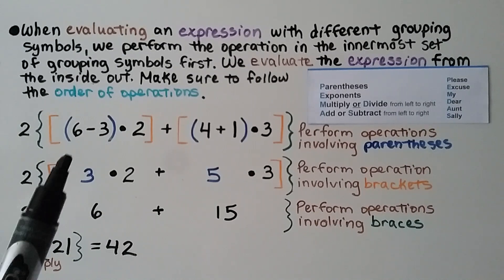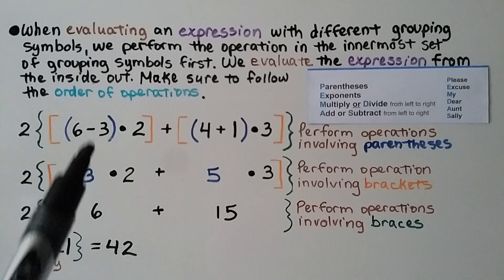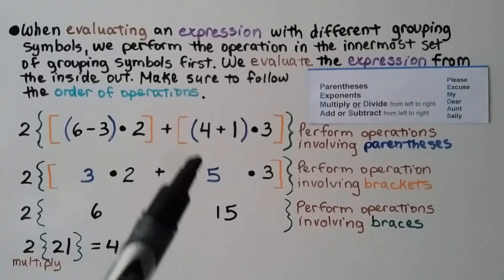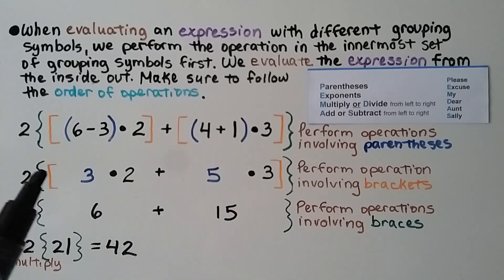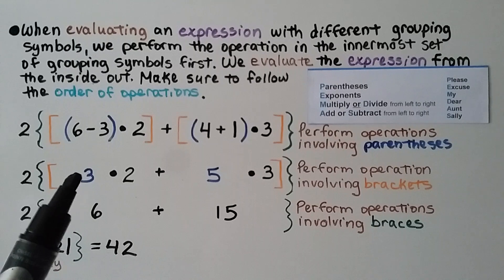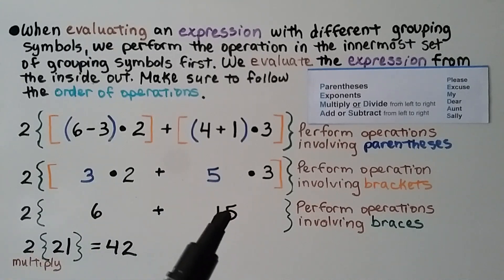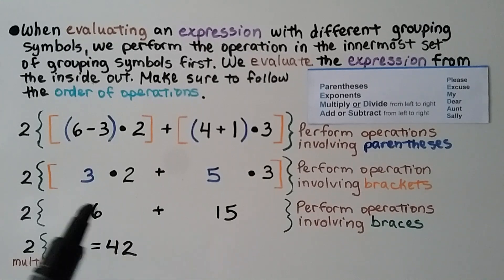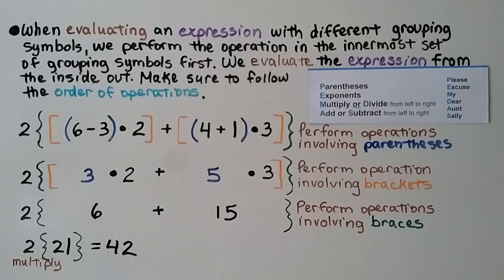We see many grouping symbols, so we start with the parentheses: 6 minus 3 is 3, and 4 plus 1 is 5. Now we perform operations within the brackets: 3 times 2 is 6, and 5 times 3 is 15. Now we perform operations within the braces: 6 plus 15 is 21. The 2 next to the brace means 2 times 21, which equals 42. The answer is 42.